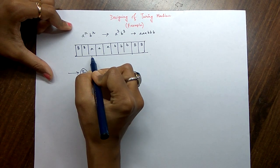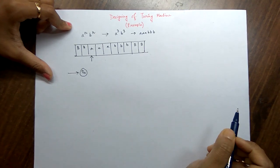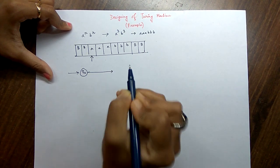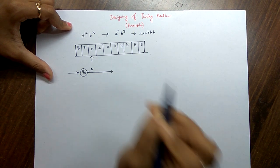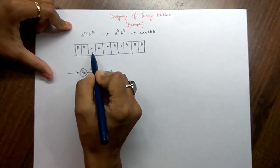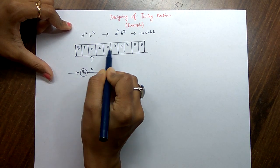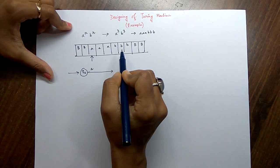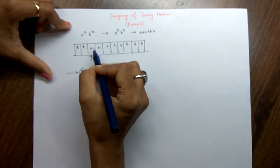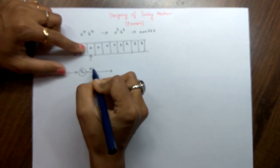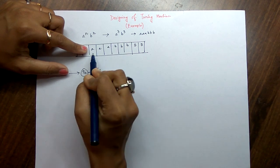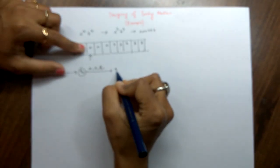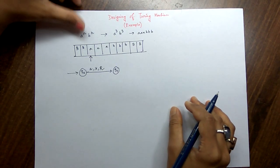Now how we can design the Turing machine: first we are starting with the first state. Obviously we will start counting the a, so the tape head is detecting the first a. When we are getting the first a, what we will do is replace it with x. All the a's we will replace with x and all the b's we will replace with y. So if we read a, we replace it with x and our movement is in the right direction. We are now on state q1.